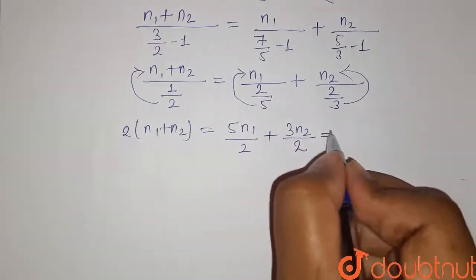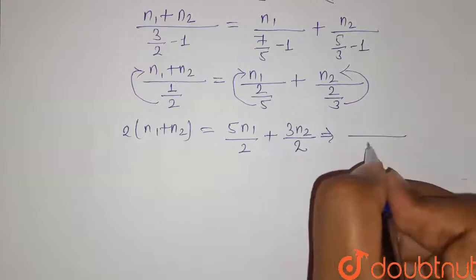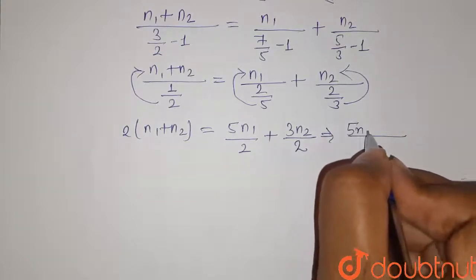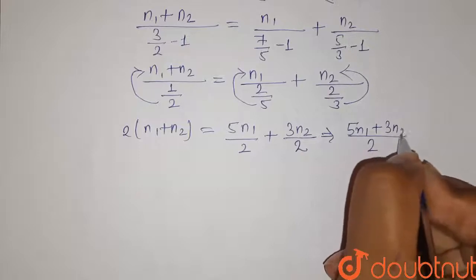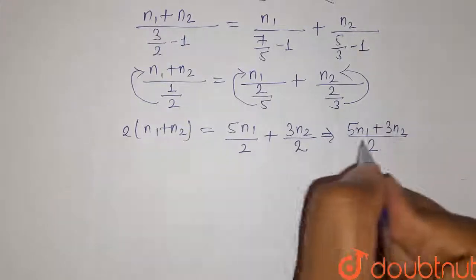Now we can take LCM here. So it will be 2 in the denominator and 5N1 plus 3N2 in the numerator.